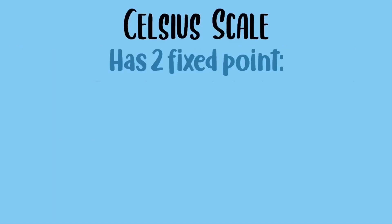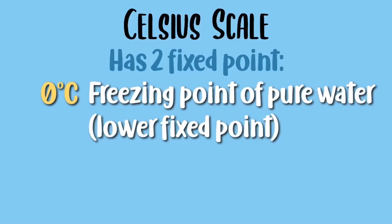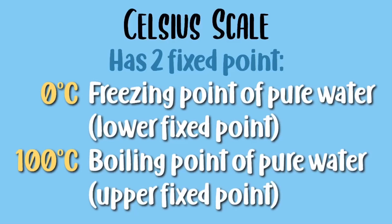The Celsius scale has two fixed points. These are 0 degrees Celsius, which is the freezing point of pure water, also known as the lower fixed point, and 100 degrees Celsius, which is the boiling point of pure water, also known as the upper fixed point. Moving on to the calibration process of a thermometer.